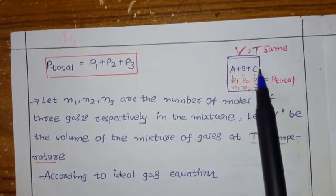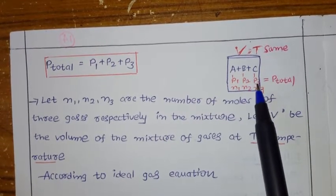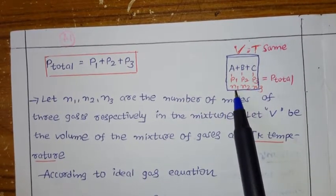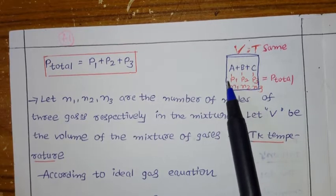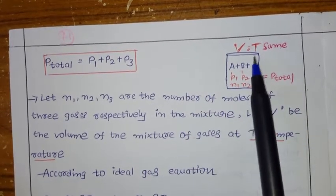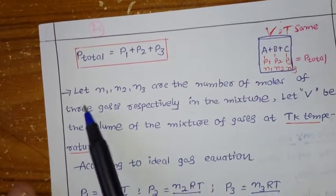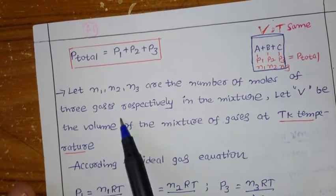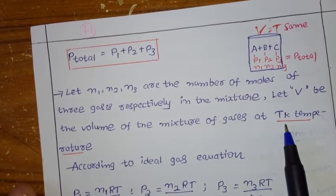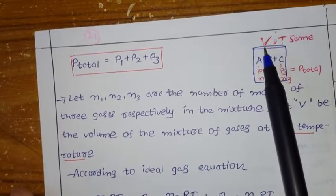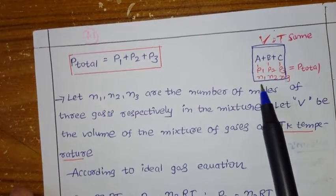We have three gases A, B, C with partial pressures P1, P2, P3 respectively, and number of moles N1, N2, N3 respectively. P_total equals P1 + P2 + P3. The condition is that temperature and volume are the same for all gases.